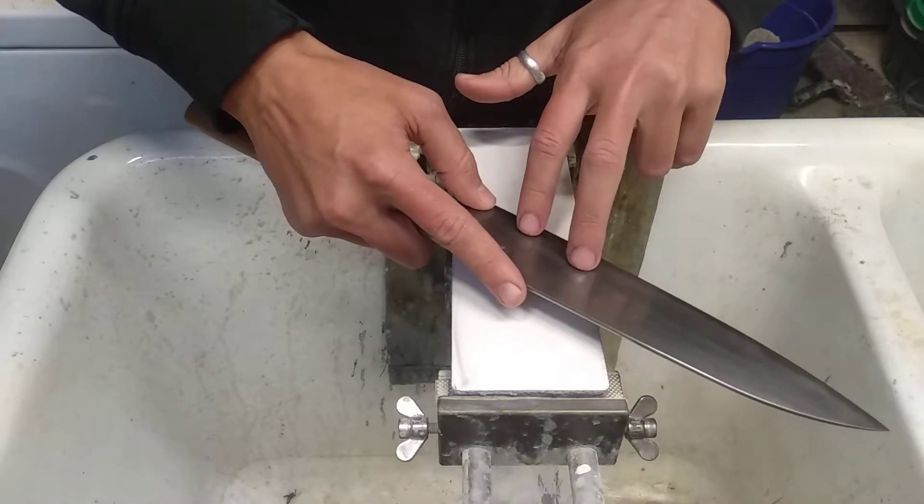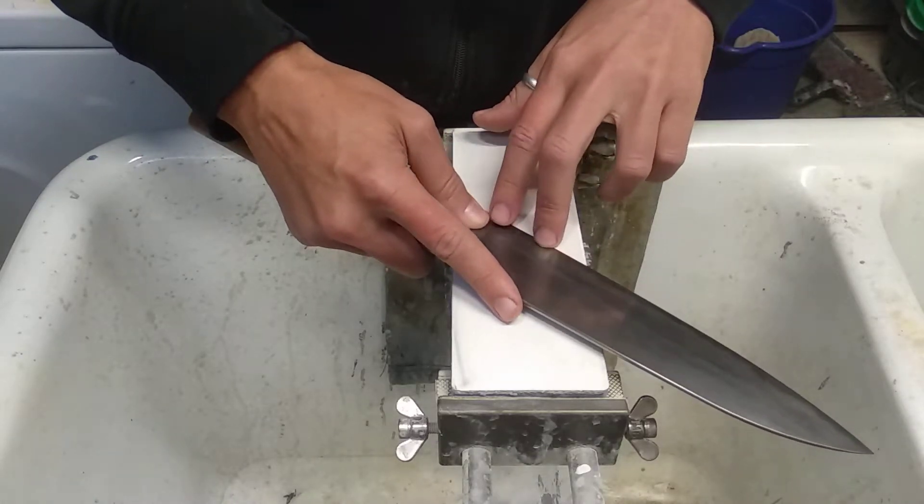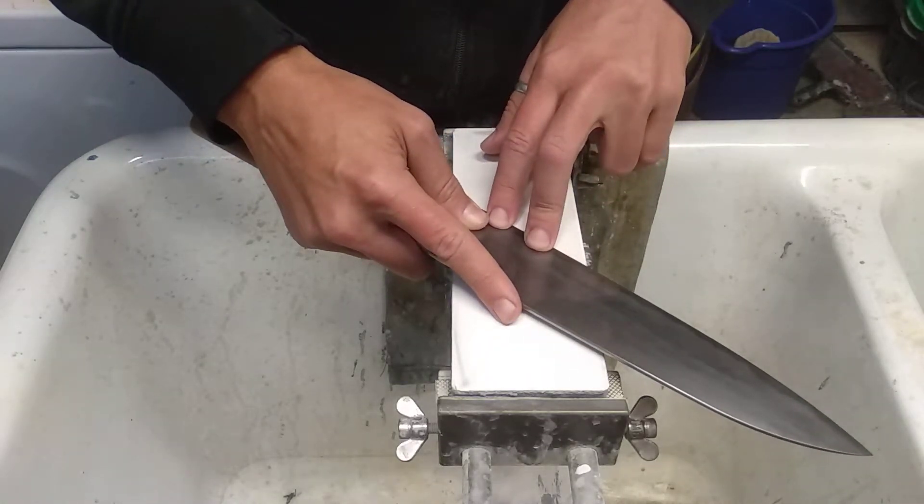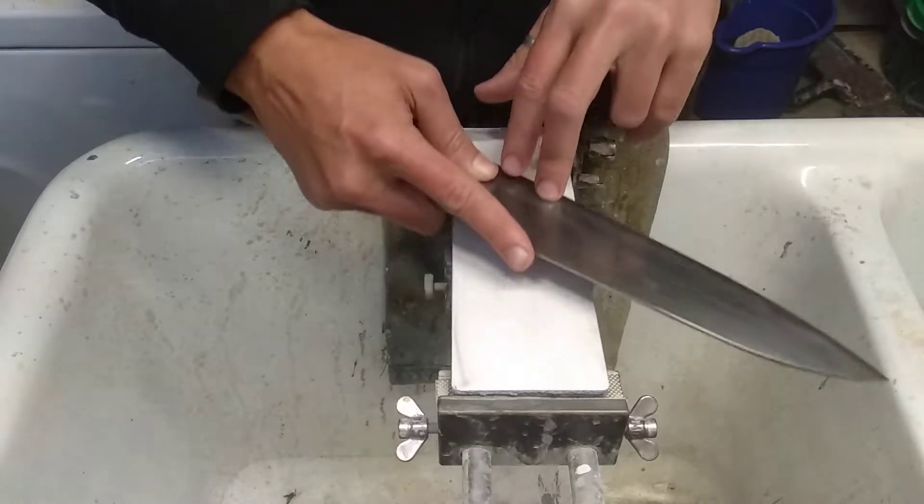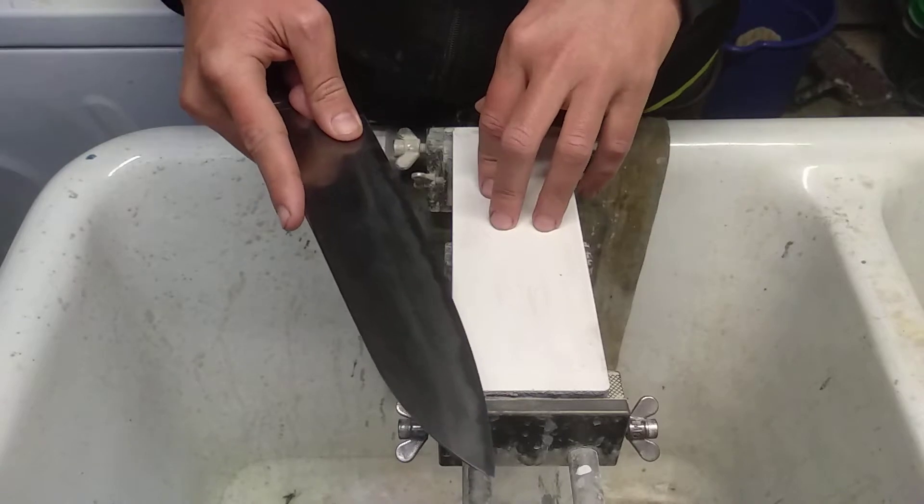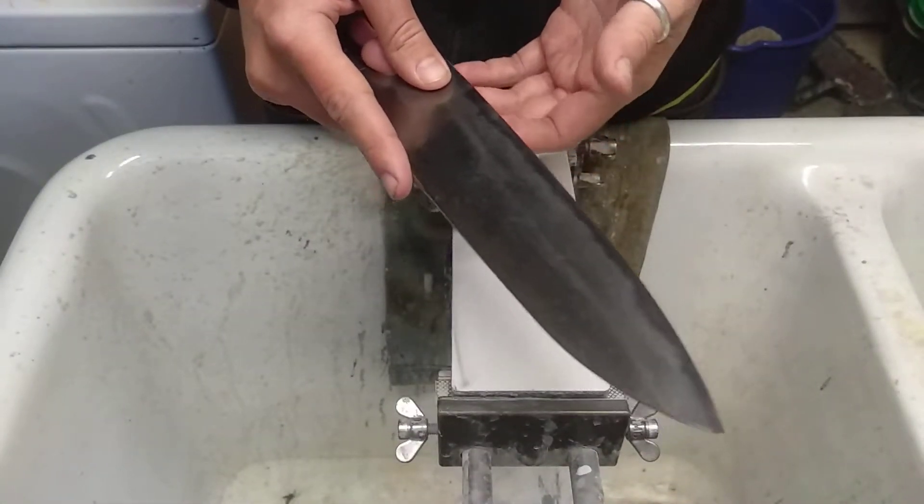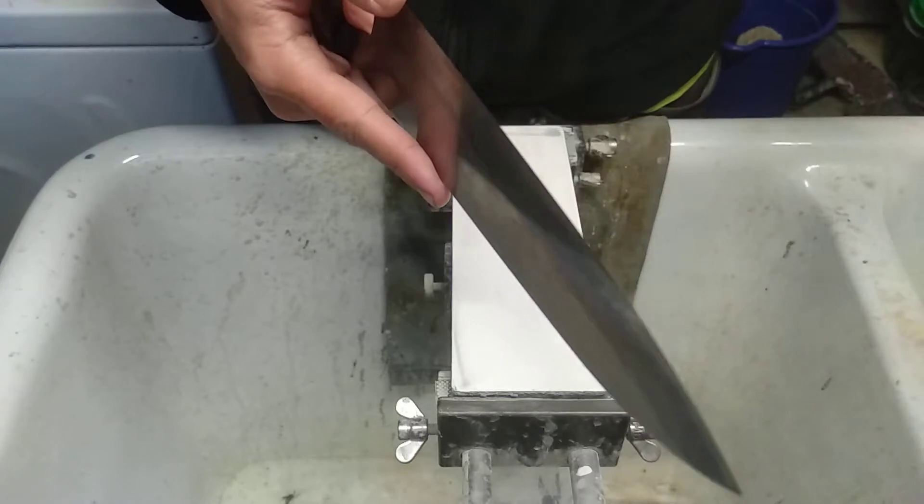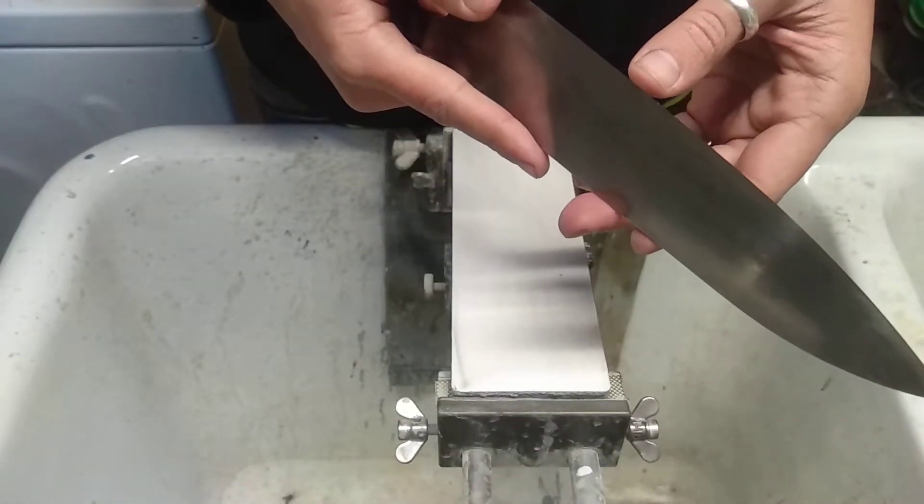Now, once you're done with that, you want to blend, and what you do is, you move your fingers a little bit higher, and put the pressure a bit higher. And now blend. Make sure you do that on a stone that's not too hard, because otherwise you can't do a proper blend.